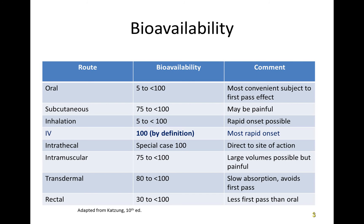The term first-pass metabolism refers to the extent to which a drug is metabolised in the liver on its first pass through the portal blood prior to reaching systemic circulation. Some metabolism also occurs in the gut prior to reaching the liver, and this is generally included as part of the first-pass effect, but it is frequently ignored in the textbooks.